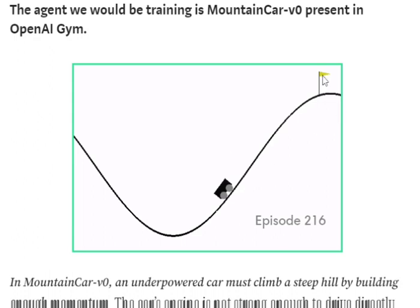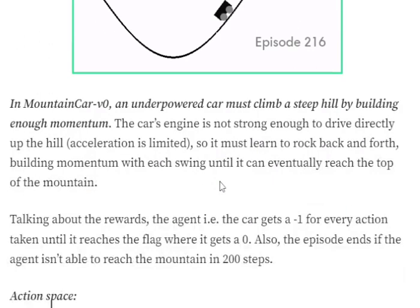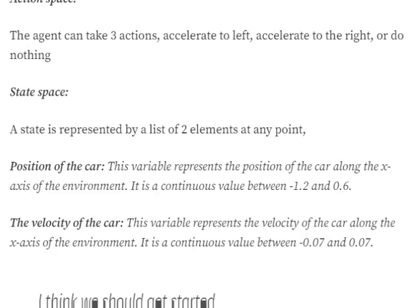There are two terminal states in this environment: one is when the car reaches the flag, and the other is when the number of steps taken reaches 200, at which point the episode automatically ends. The car must reach the flag before completing 200 steps. The reward system is straightforward — for any state other than reaching the flag the reward is -1, and when it reaches the flag the reward is 0. There are three possible actions: left acceleration, right acceleration, or do nothing. The state space is a 1D array with two elements: velocity and vertical height.